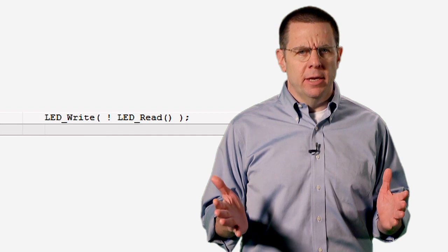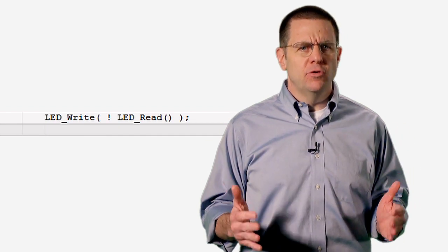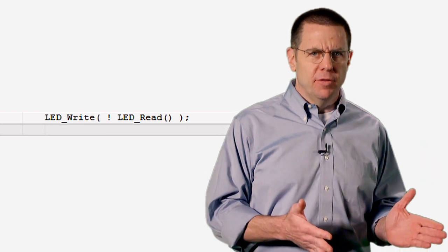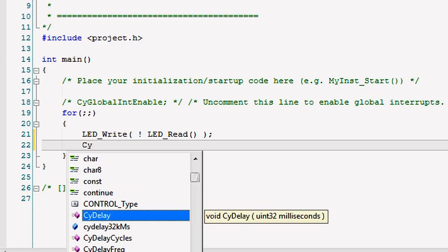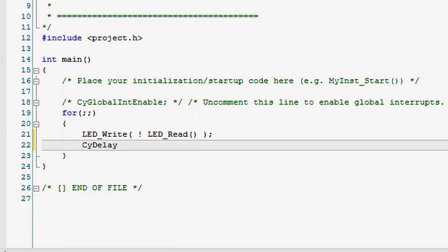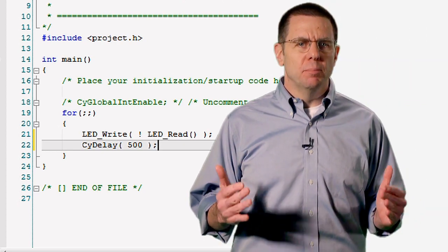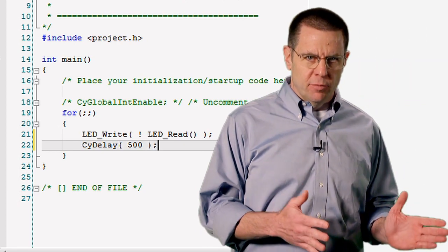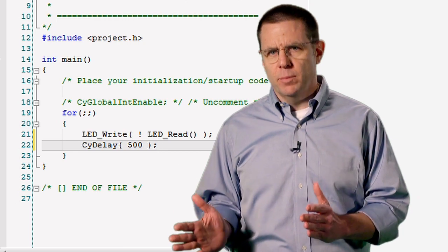To toggle the state of the LED, we read the current state of the pin, then we invert it using the NOT operator, and then we write the new state back to the pin. We'll also use the CYDelay function to slow the PSOC so that we can see the LED blink. CYDelay just inserts a customized busy loop of X milliseconds, in this case, 500 milliseconds. Our LED will blink at 1 hertz, 500 milliseconds on, 500 milliseconds off.